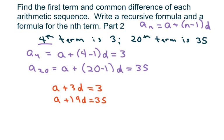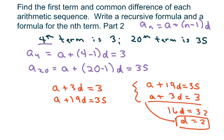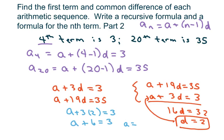What I like to do is rewrite these and put the bigger number on top. All we're going to do is eliminate my A. So when you subtract, you get 16d equals 32, so d equals 2. Now if d equals 2, I'm going to plug it back in to find my A. So I have a plus 3 times 2 equals 3, which gives a plus 6 equals 3, so A equals negative 3.